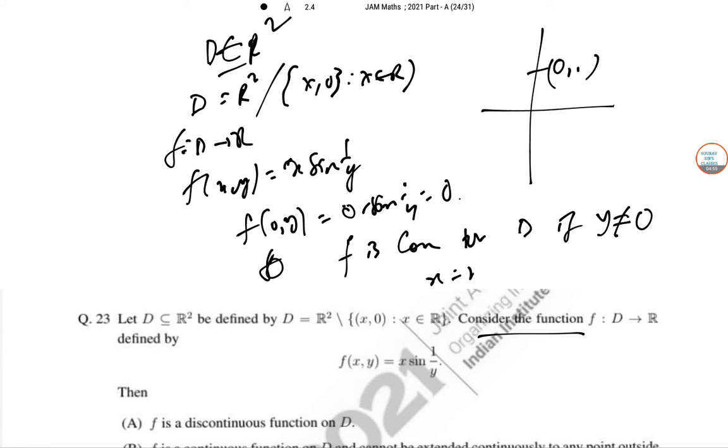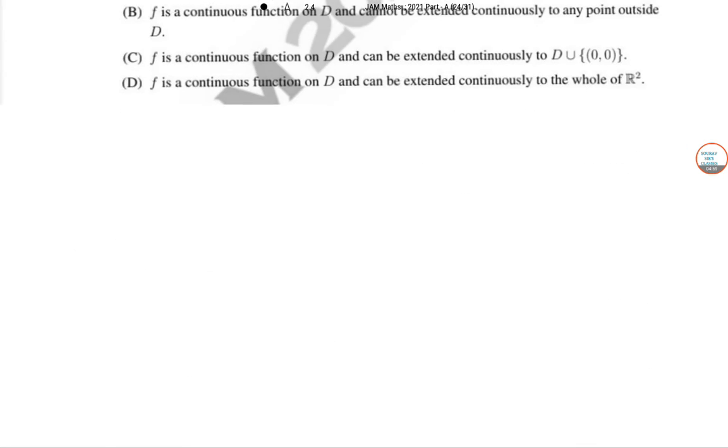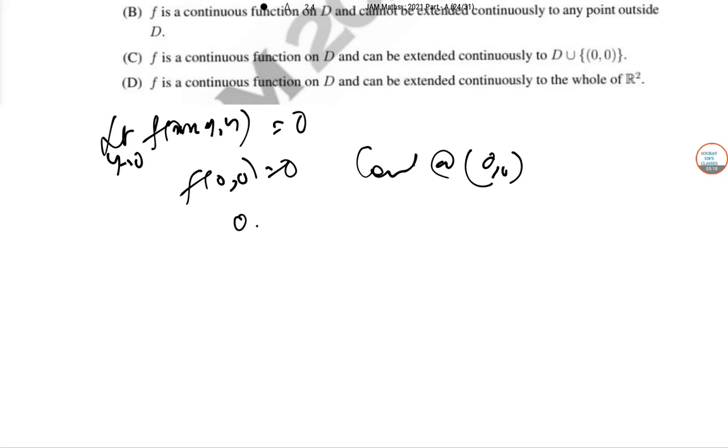So, F of zero Y is simply not equal to zero. F is continuous on D if Y not equal to zero. So, putting if we put X equal to MY, limit Y tends to zero of F of MY, Y equal to zero. So, F of zero zero equal to zero. So, F is continuous at zero zero. So, at point zero one.